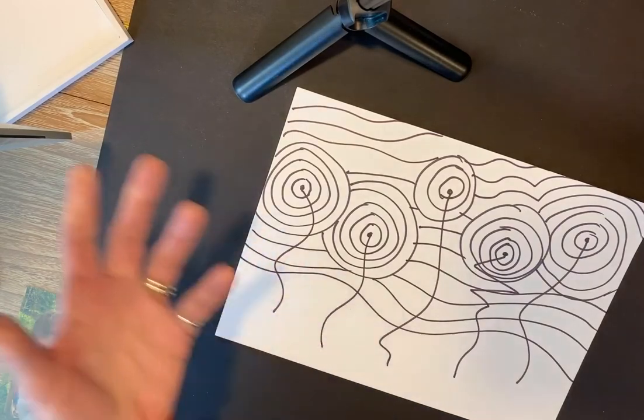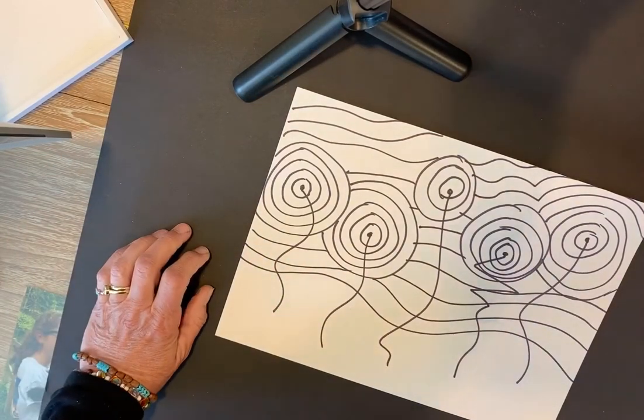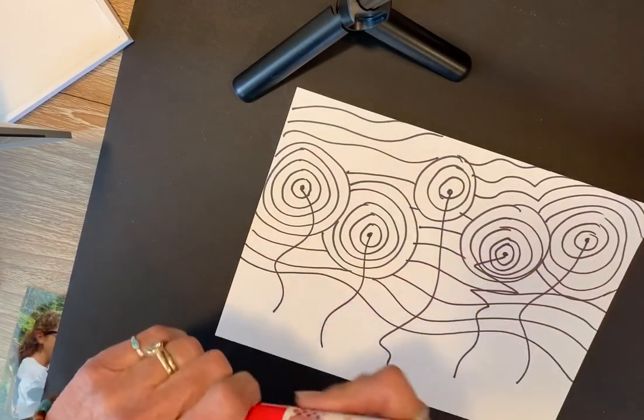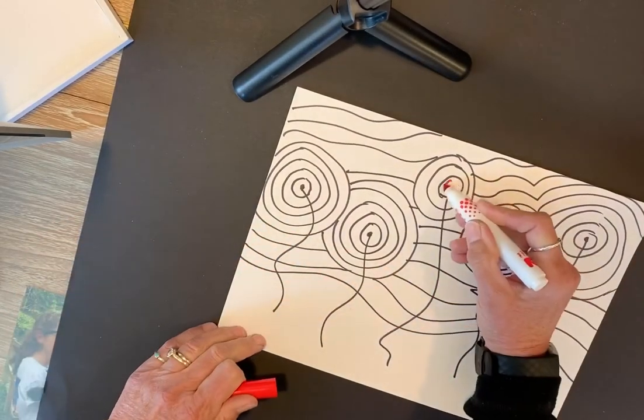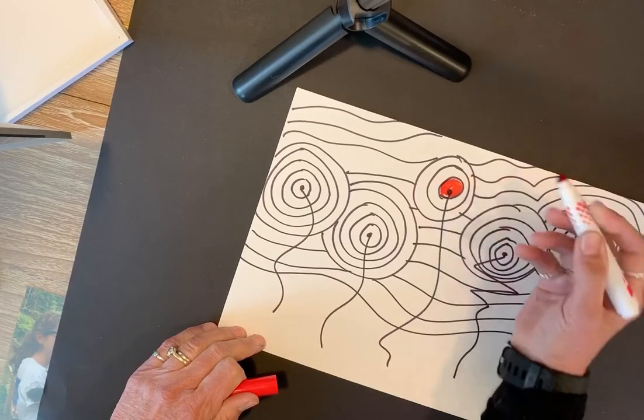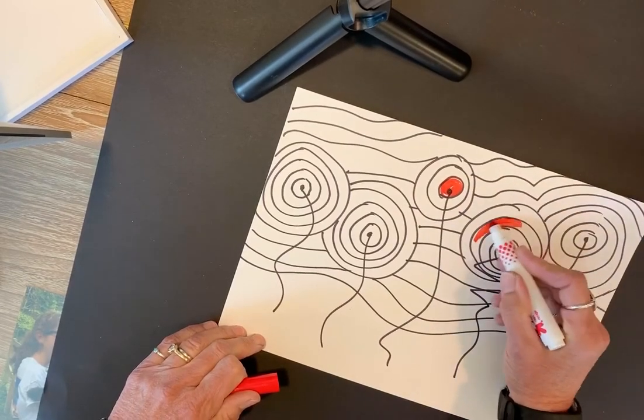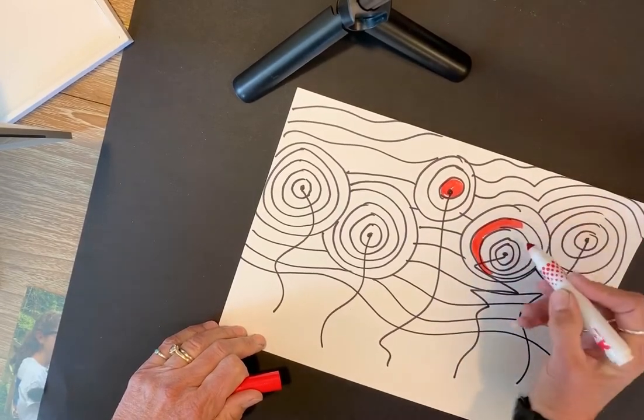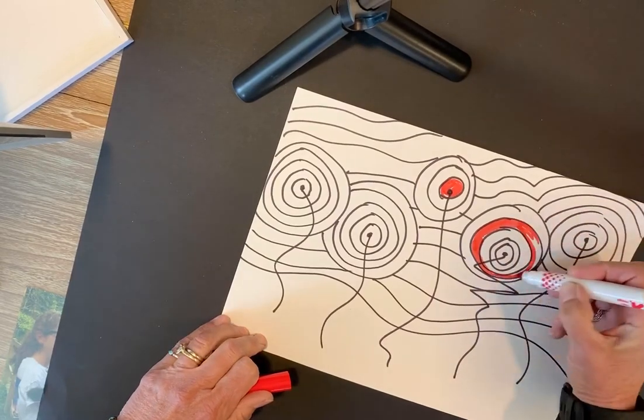From then on, use your imagination. Use whatever materials you have on hand. Here's a marker. I had some markers. Just color. Add color to every individual space. Between each pair of lines, add color.